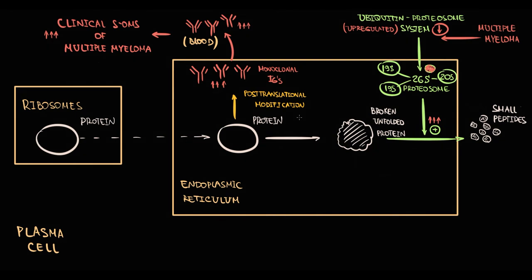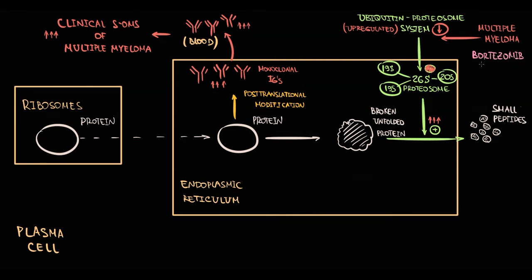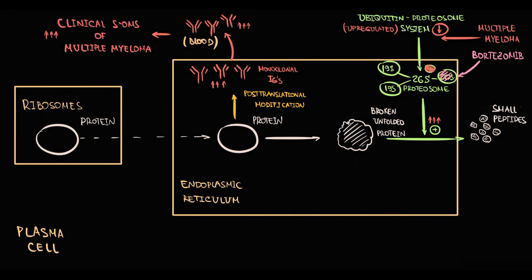But we can use their strength against them. Currently, we have medication that inhibits proteosome function. We have a class of drugs called proteosome inhibitors. Nowadays, most commonly we use bortezomib. Bortezomib blocks 20S subunit in proteosomes, and by this bortezomib inhibits proteosome activity.